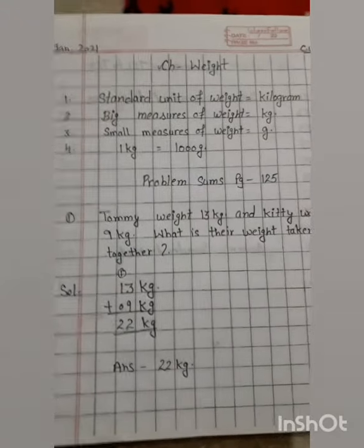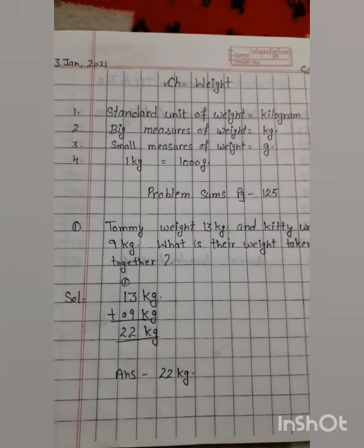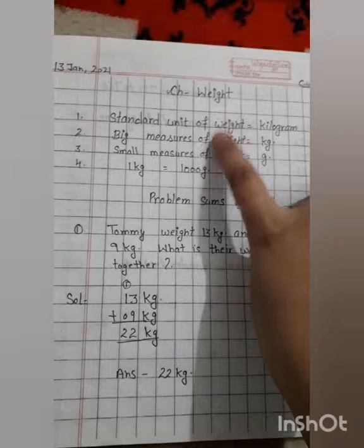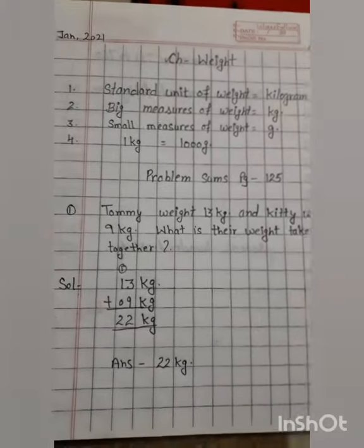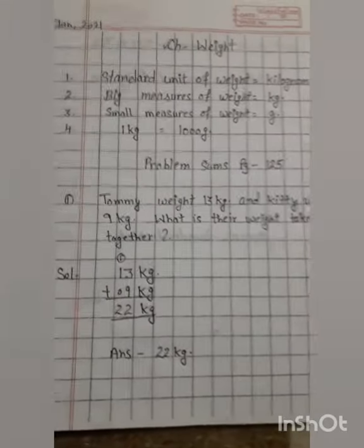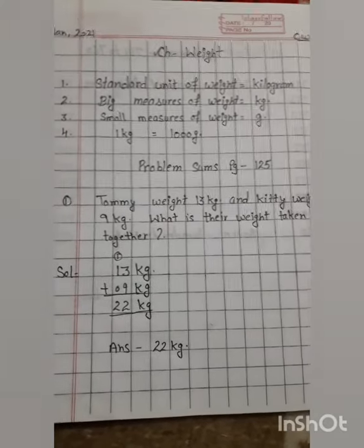First, we are going to discuss some important points related to this chapter. First point: standard unit of weight. What is the standard unit of weight? Standard means main unit. Weight means vajan. The main unit for measuring weight is kilogram, written as kg.